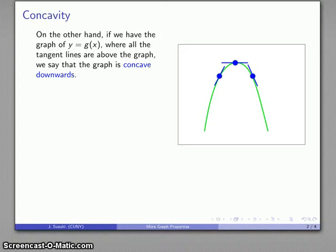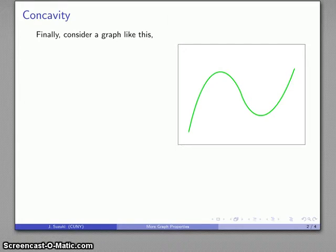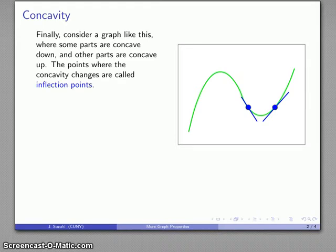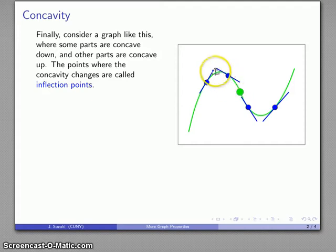The universe is rarely black and white — it's often filled with shades of grey, not fifty of them. Consider a graph where sometimes parts are concave down, so the graph is below the tangent line, and other sections are concave up, where the curve is above the tangent line. The concavity changes from down to up, and the place where that change occurs is called an inflection point. Before this point the tangent lines are all above the graph; after it they are all below.